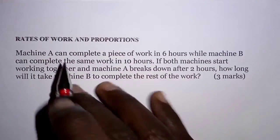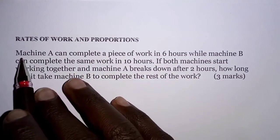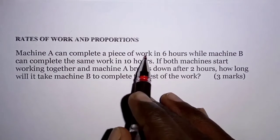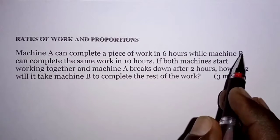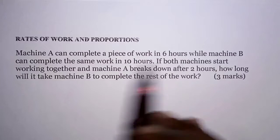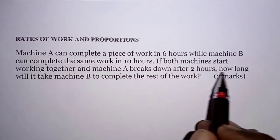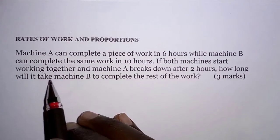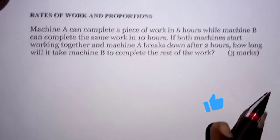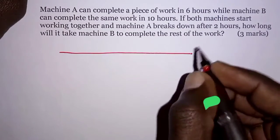Hello everyone, this video is about rates of work and proportions. The question reads: Machine A can complete a piece of work in 6 hours while Machine B can complete the same work in 10 hours. If both machines start working together and Machine A breaks down after two hours, how long will it take Machine B to complete the rest of the work? We're going to have a summary of the information.